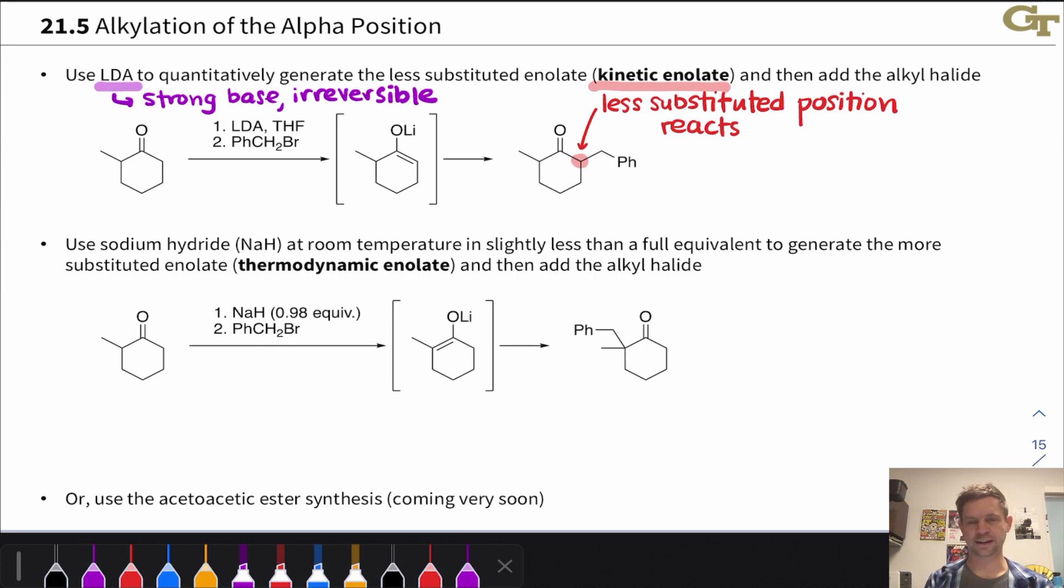Generating the thermodynamic enolate is a little bit trickier. We cannot use alkoxide or hydroxide base. That'll just react with the alkyl halide in an SN2 reaction. Then we'll end up with an ether that's not going to do the job for us. Instead, we have to be a little bit clever here and realize that if I use a strong base like sodium hydride, but I don't use a full equivalent, say I only use 98% or so of what I need, that leaves a little bit of ketone unreacted. And so while I generate the less substituted kinetic enolate at first, because there's some reactant left behind, equilibration will occur.